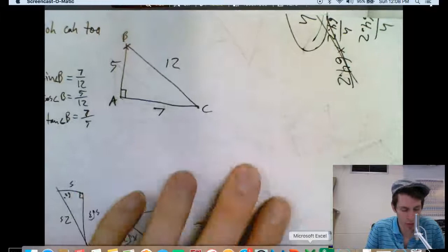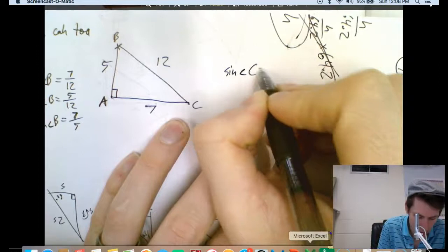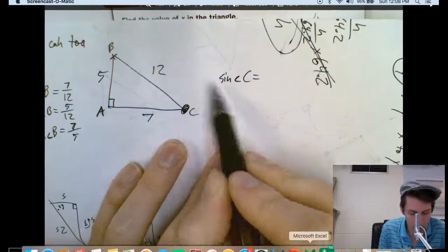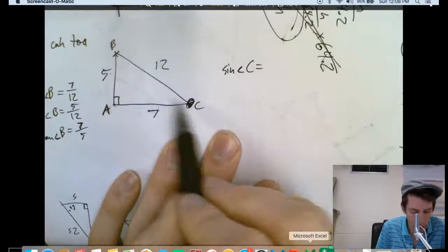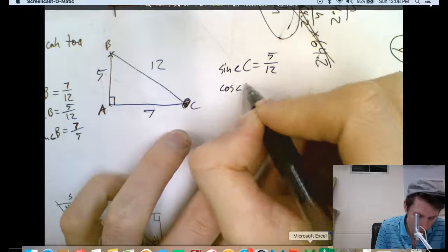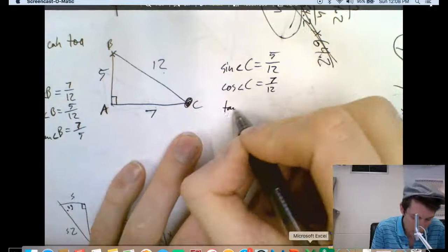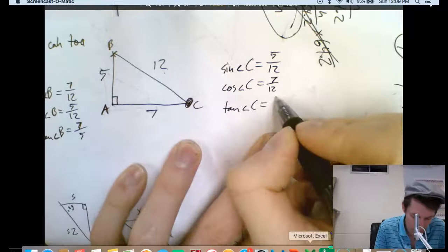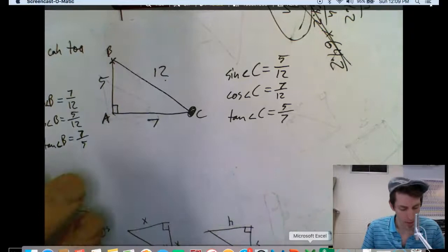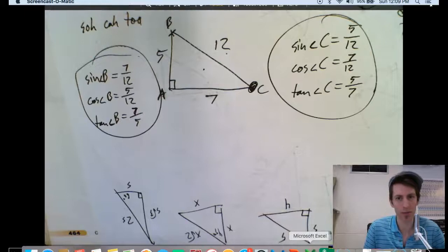Now for angle C, standing at C: sine of angle C equals opposite over hypotenuse = 5 over 12. Cosine of angle C equals adjacent over hypotenuse = 7 over 12. Tangent of angle C equals opposite over adjacent = 5 over 7. Those are all six trigonometric ratios for this triangle.